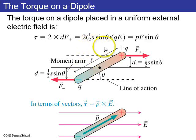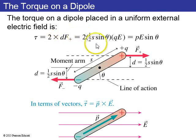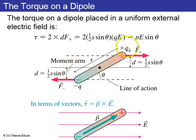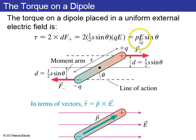The torque on a dipole is computed using both the positive and negative contributions. The lever arm is one-half s sine theta, where s is the dipole length. The dipole moment p equals s times q, and the force is qE, giving torque equal to p times E times sine theta, where theta is the angle between the dipole moment and the electric field.